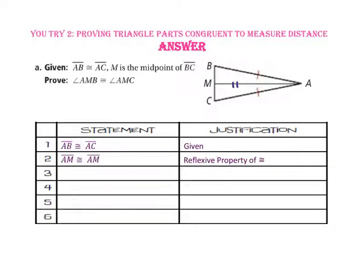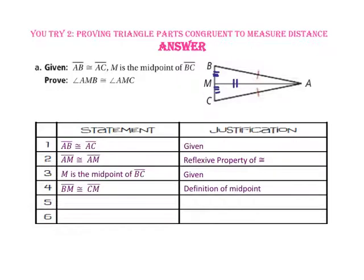Now, let's use the other piece of given information that states that point M is the midpoint of segment BC. By the definition of midpoint, side BM is congruent to side CM. Since we have three sides congruent to three corresponding sides of another triangle...